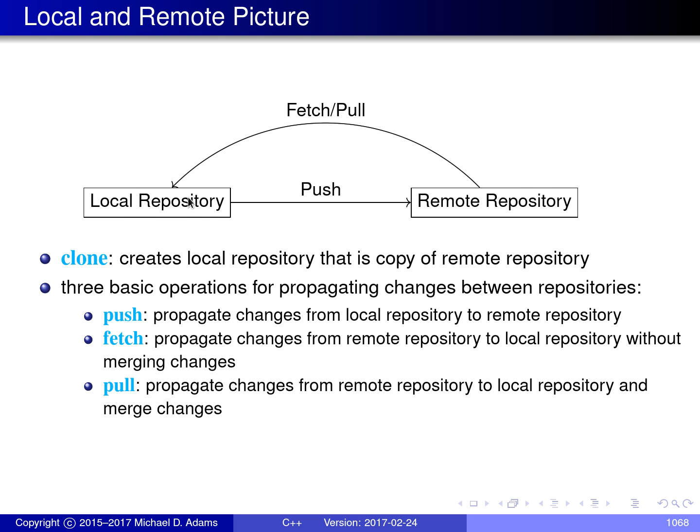The pull operation propagates changes from the remote repository to the local repository, but unlike fetch, it also merges the changes with local data. In practice, the very first operation a user typically performs is a clone. When a user has changes they would like to publish, a push operation propagates changes from the local repository to a remote repository. When a user wants to incorporate changes from others, a pull or fetch operation is used.